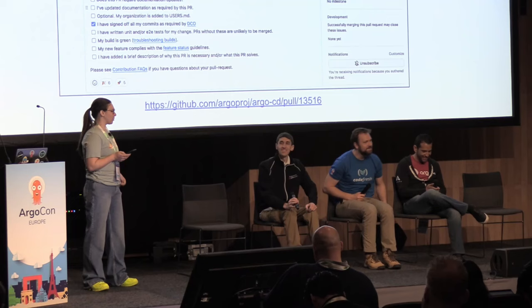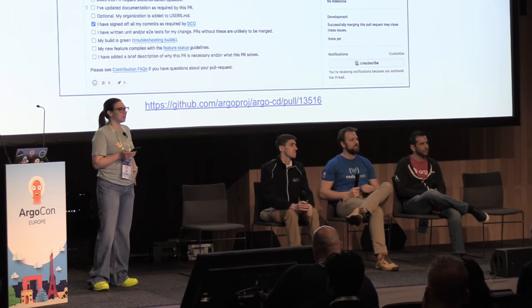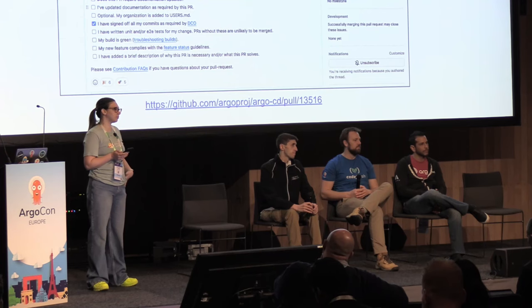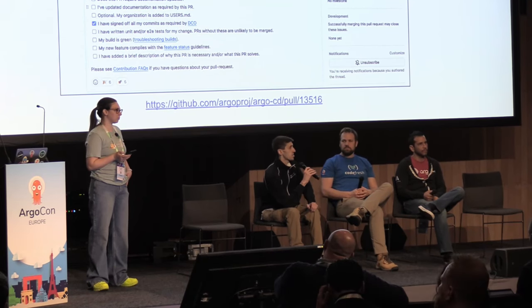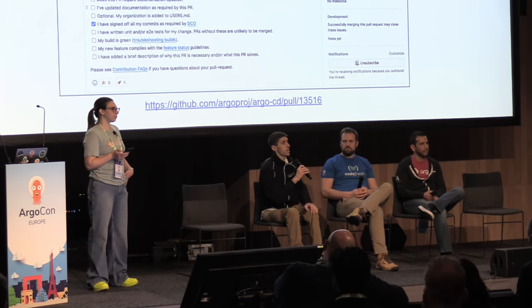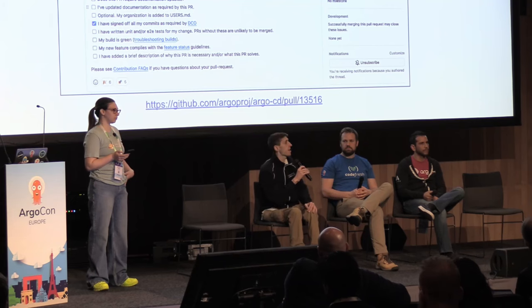Audience question: regarding rendering manifests, doesn't that collide with the concept of transparency — being able to see what was changed — when you're storing a binary rather than code in Git? There are two approaches: you can render manifests fully within your CI pipeline then push the OCI artifact, or you can push raw manifests stored in OCI artifacts and have Argo render them the same way it does today. We'll see these patterns continue to evolve as the proposal moves forward.